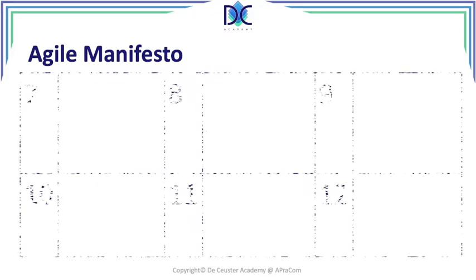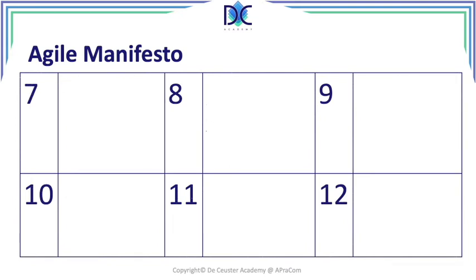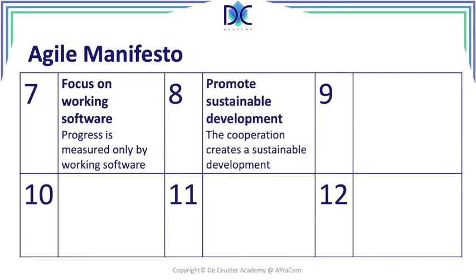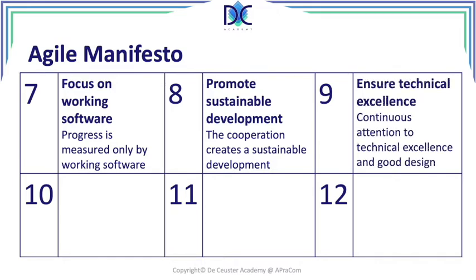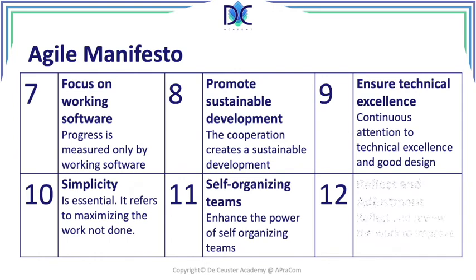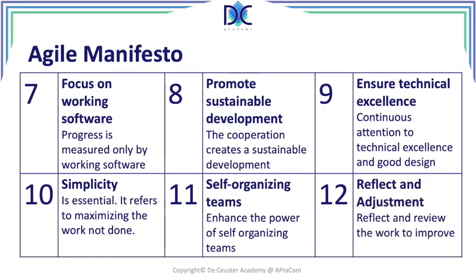The remaining six principles of the Agile manifesto are: focus on working software — we always want something that is working; promote sustainable development; ensure technical excellence; simplicity is essential, referring to maximizing the work not done — we only create value and don't do unnecessary work; self-organizing teams; and finally, reflect and adjust. These are the 12 principles in the Agile manifesto.